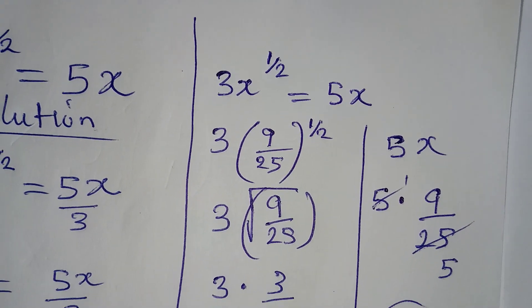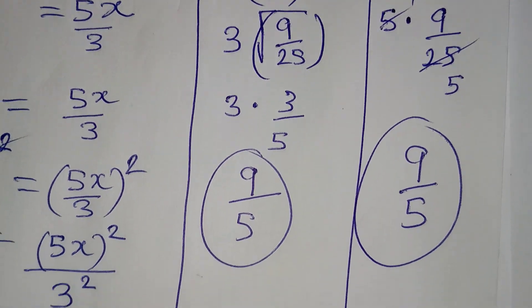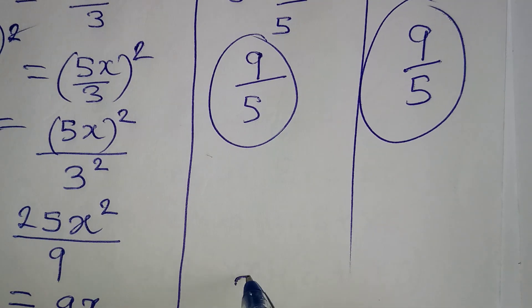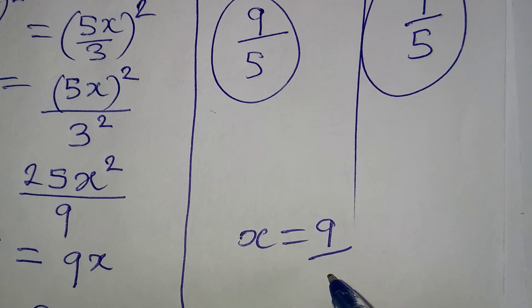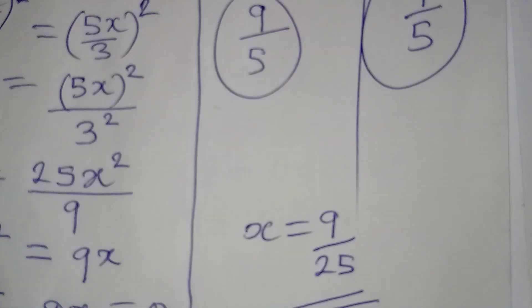So this means that we are correct. This means that we are correct to say x is equal to 9 over 25. Thank you for watching.